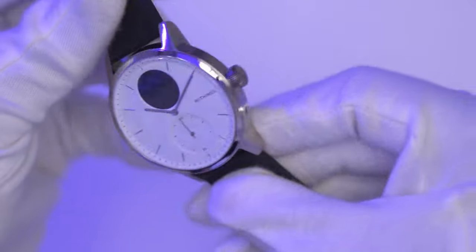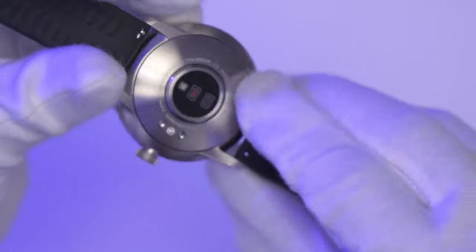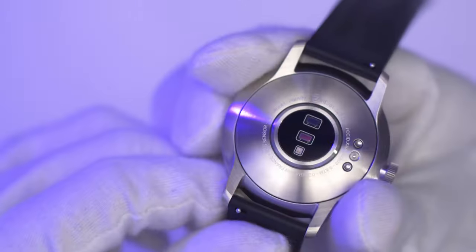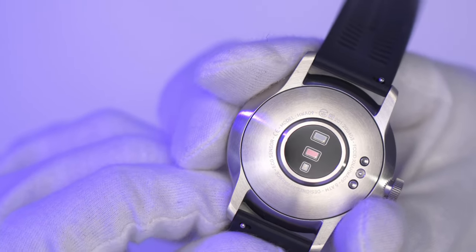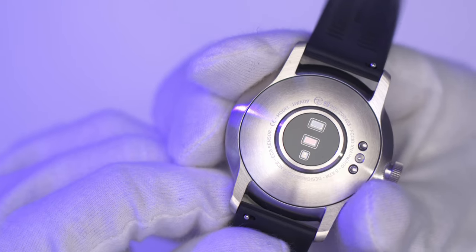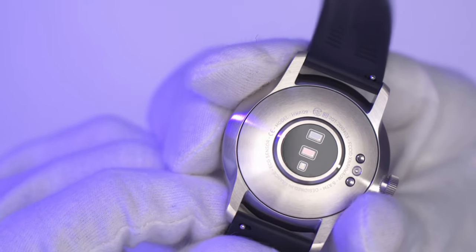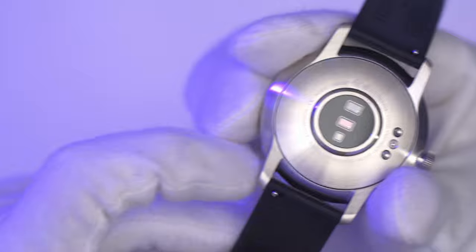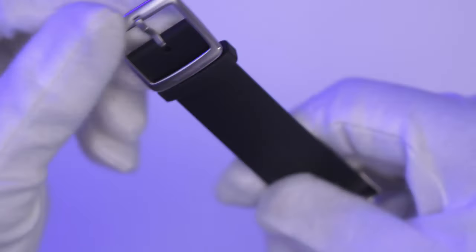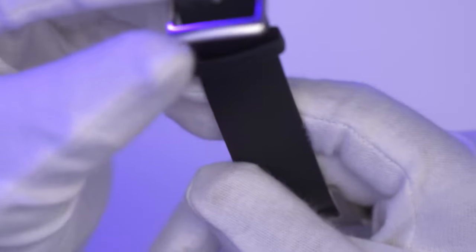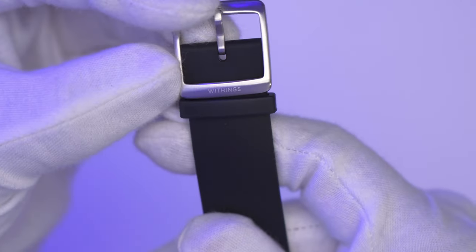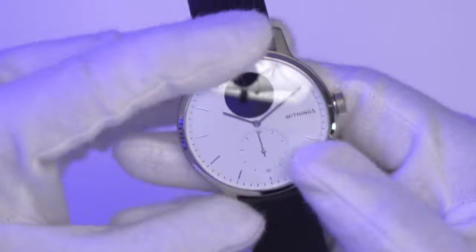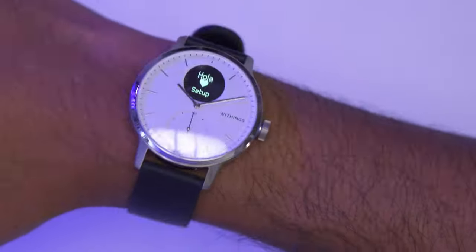Taking a closer look at the back, it shows the model, so it's an HW A 09, designed in France. It shows the water rating, and then in terms of the buckle, you can see it has the Withings text right there, and then on the dial—that's pretty much the only place it appears.